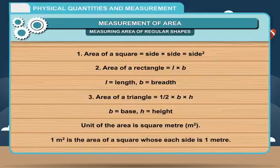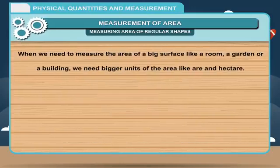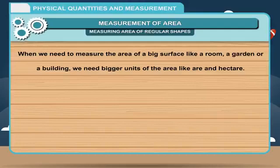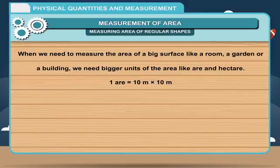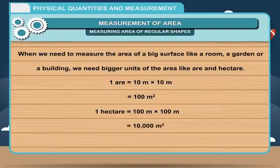1 square meter is the area of a square whose each side is 1 meter. When we need to measure the area of a big surface like a room, a garden, or a building, we need bigger units of area like are and hectare. 1 are is equal to 10 m × 10 m, which equals 100 m². 1 hectare is equal to 100 m × 100 m, which equals 10,000 m².